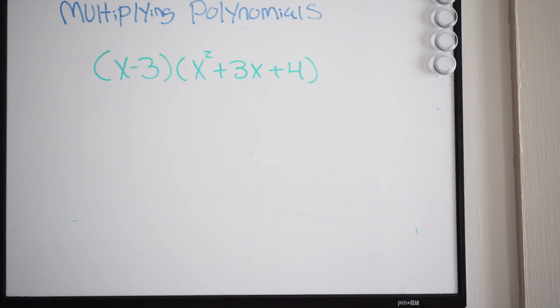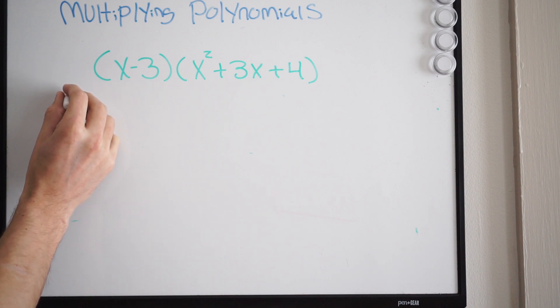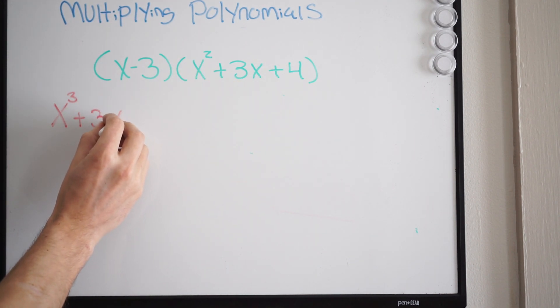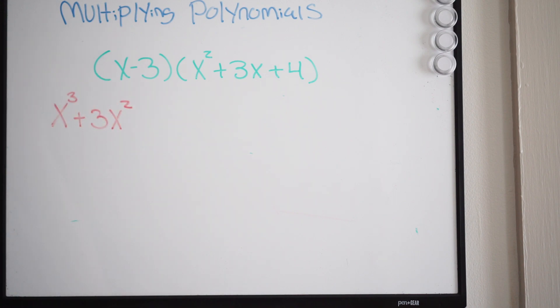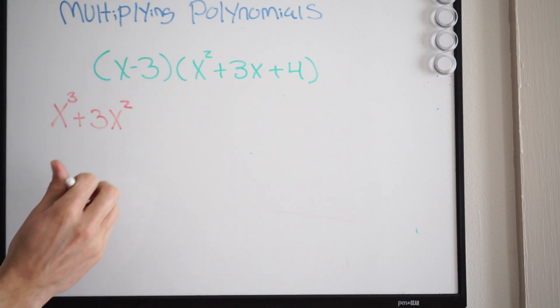I'll try to do this in two different colors so we can see the difference. So the first one, we're going to work on this term. We're going to do x times x squared, so that's going to be x cubed. And then moving on to the next term, x times 3x, well that's going to be plus 3x squared. And then x times 4, well that's going to be plus 4x.